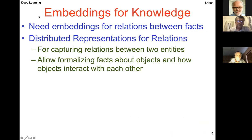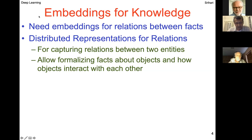Embeddings have been key for natural language processing, and similarly, embeddings are also key for knowledge representation. We need embeddings for relations between facts — distributed representations just like we had for words. Here we start with relations and model them in distributed representations that capture relationships between entities, allowing us to formalize facts about objects and how they interact. This is where we go when we generalize from NLP to knowledge representation.